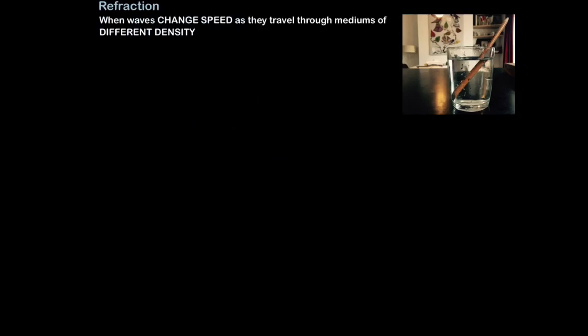So refraction is when waves change speed as they travel through mediums of different density. Electromagnetic waves, such as visible light, x-rays, UV, and so on, slow down in more dense mediums. For example, if they're traveling from air to glass, they will slow down.